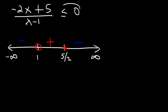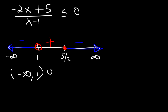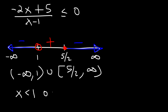We want the answers that are less than 0, so we want the negative regions. Shading those, the answer is negative infinity to 1, not including 1, and then 5 over 2 to infinity. As an inequality: x is less than 1, or x is greater than or equal to 5 over 2.